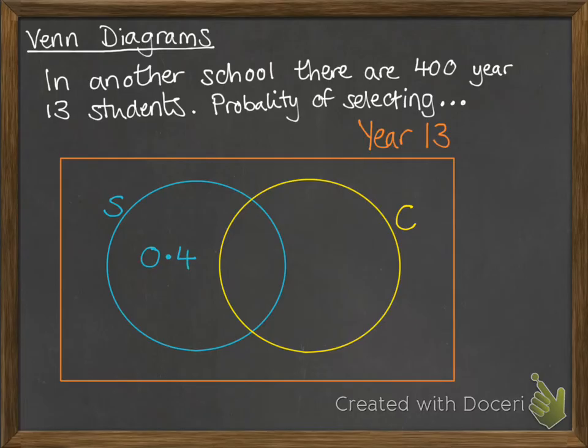So the probability of selecting a student that does only statistics is 0.4. The probability of selecting a student that does only calculus is 0.25. The probability of selecting a year 13 student that does neither statistics nor calculus is 0.18. From that information, we can work out that overlapping bit in the middle.